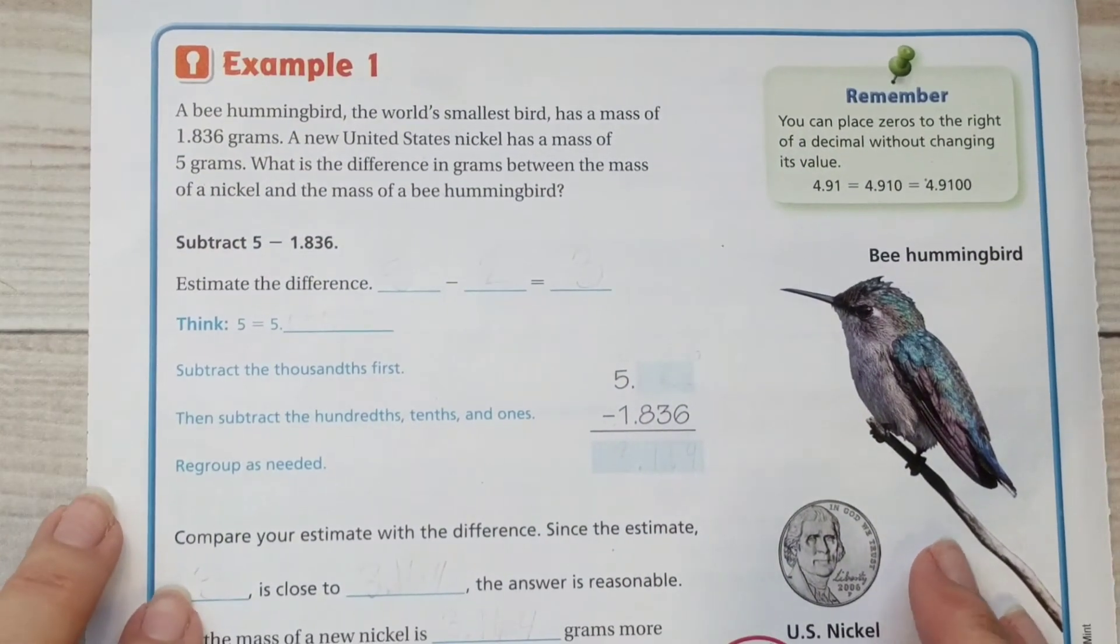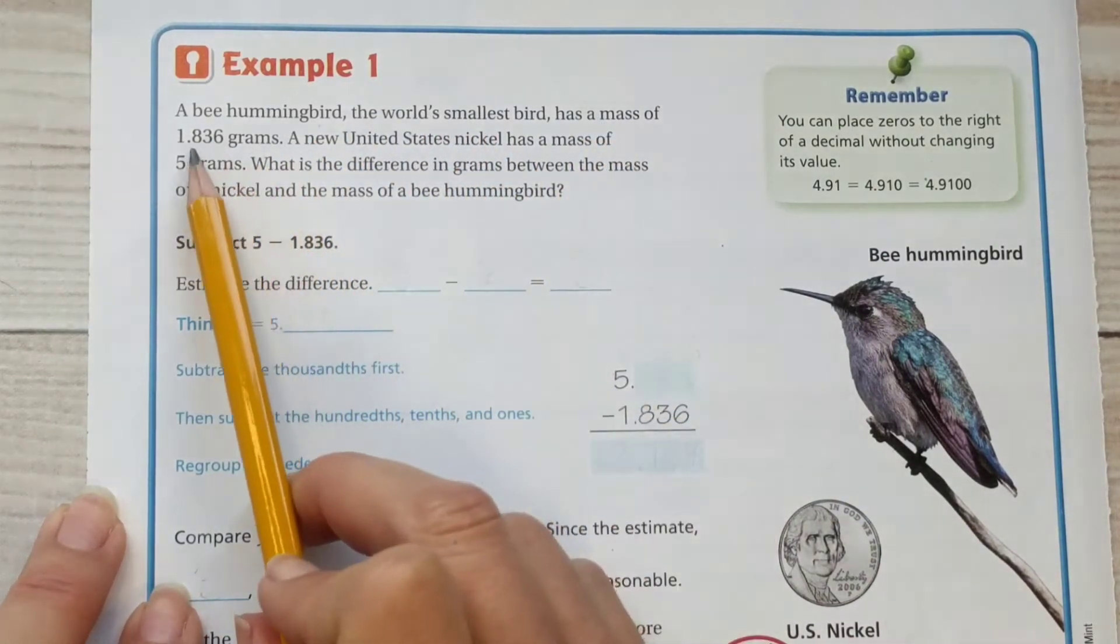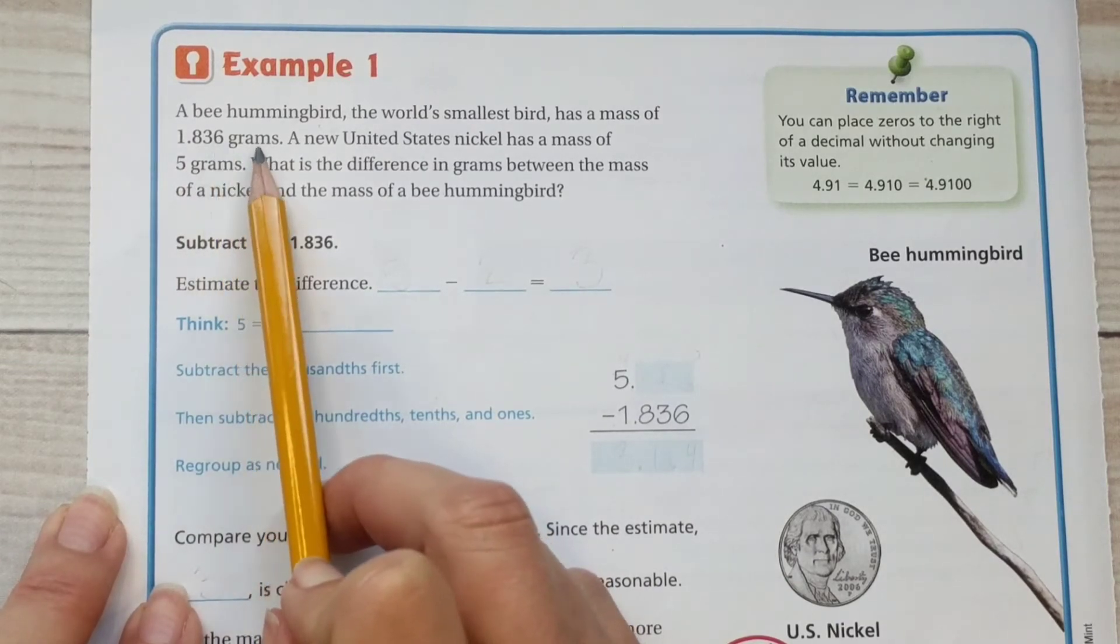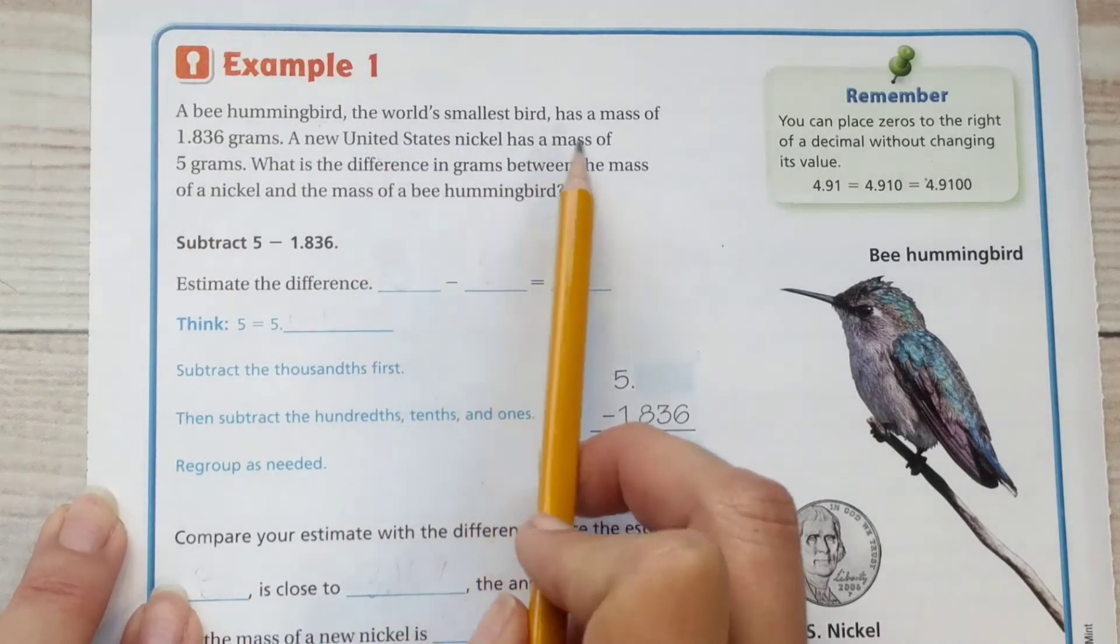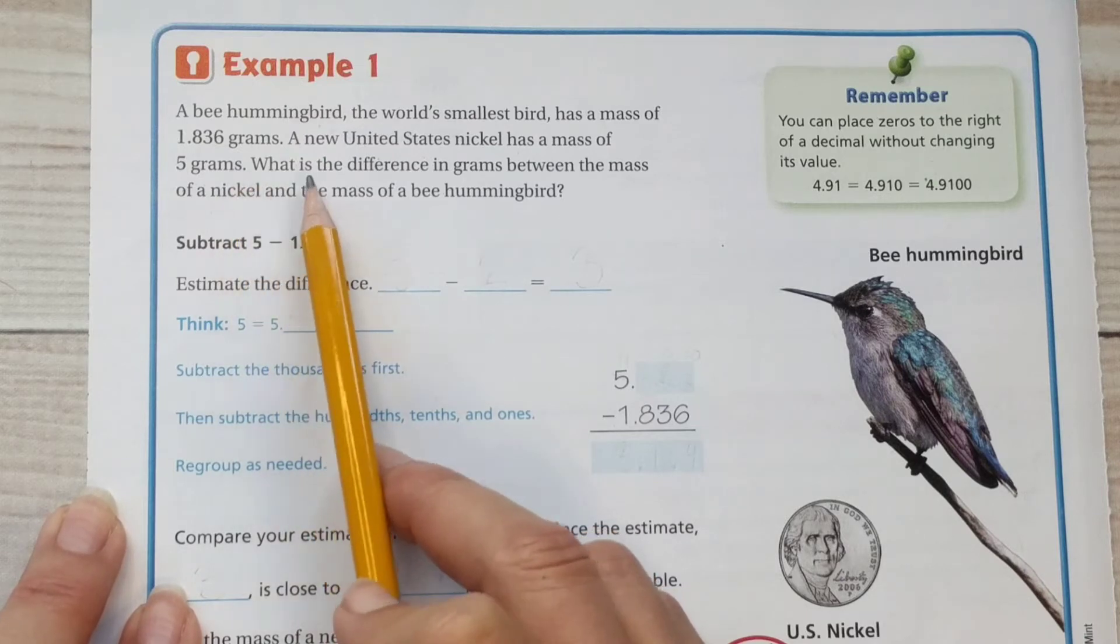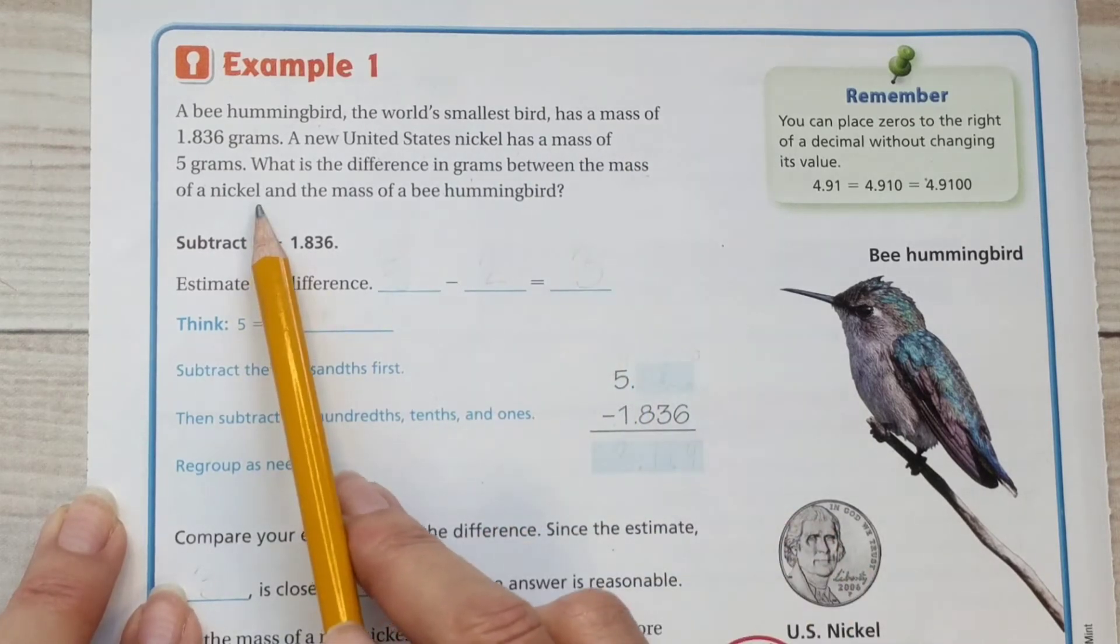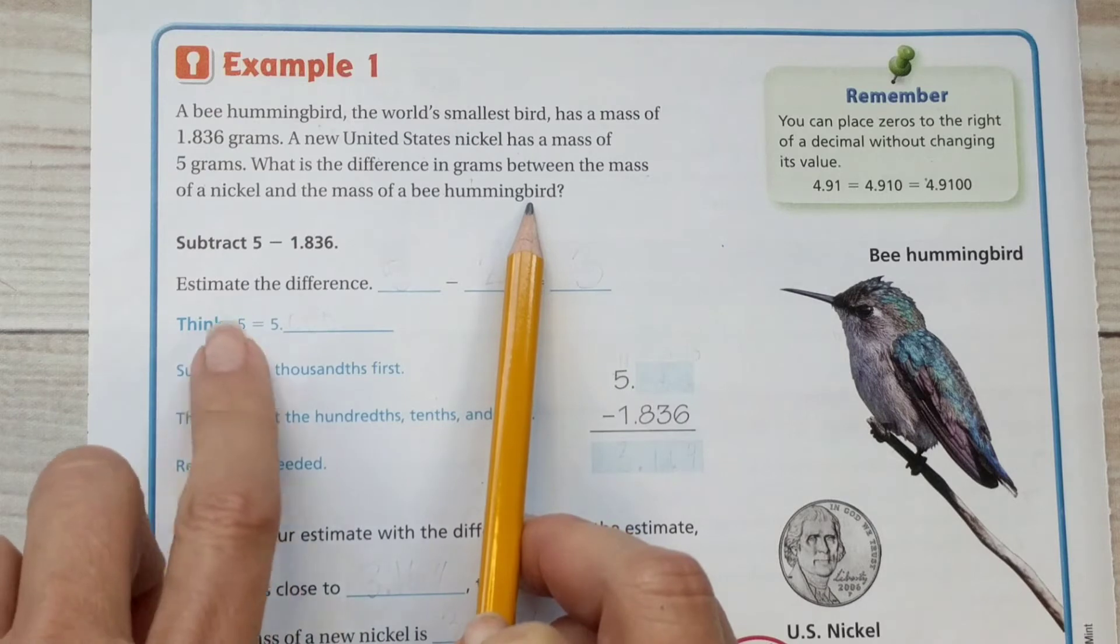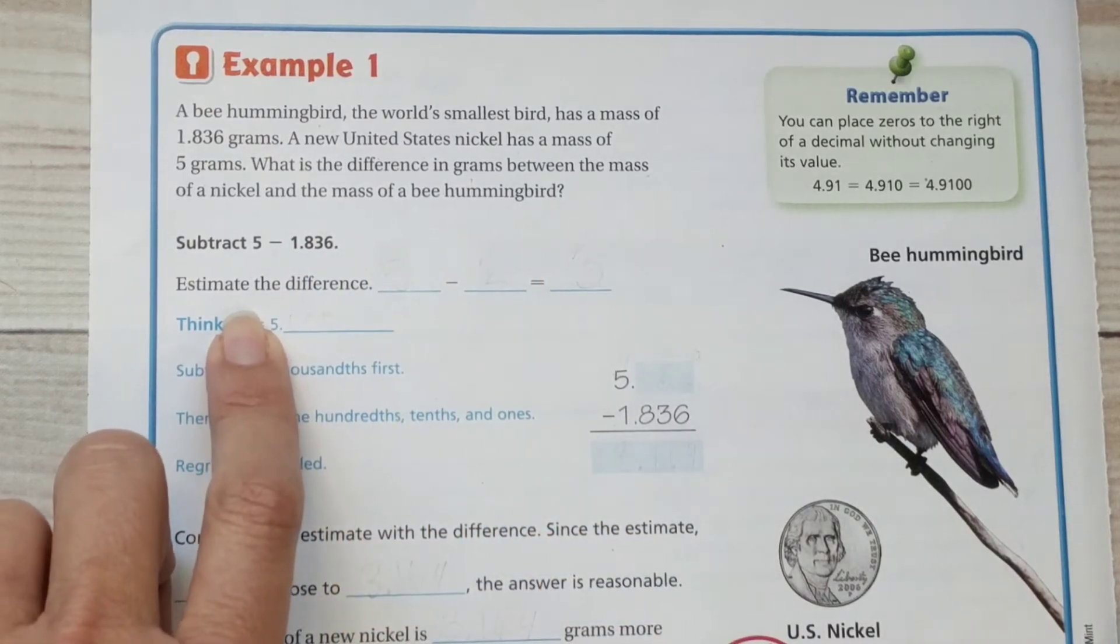Here we go. The next example. A bee hummingbird, the world's smallest bird, has a mass of 1.836 grams. A new United States nickel has a mass of 5 grams. So that's quite a bit bigger. What is the difference in grams between the mass of a nickel and the mass of a bee hummingbird? So in order to find the difference, first we're going to estimate to make sure that our final answer is reasonable.